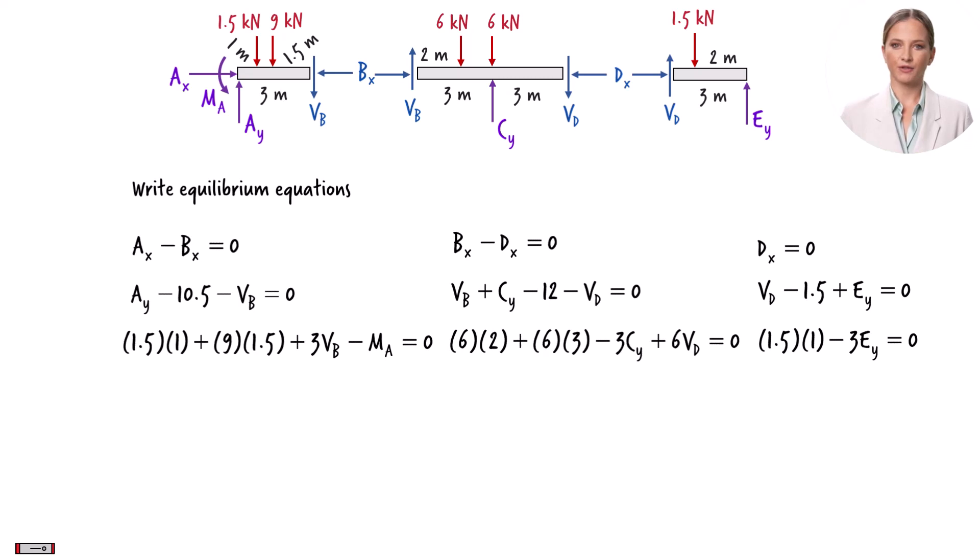These nine equilibrium equations embody nine unknown variables. There are five unknown support reactions and four unknown axial and shear forces located at the two internal hinges.